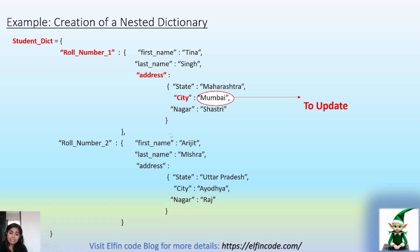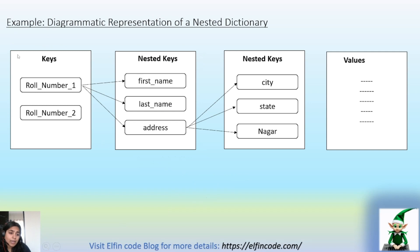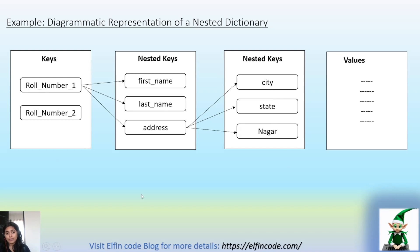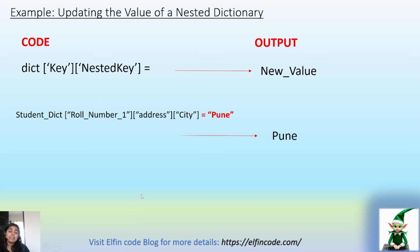This is what is called a nested dictionary — a dictionary inside a dictionary. In the diagrammatic representation, we first have the main keys: role number one and role number two. Inside these keys we have nested keys such as first name, last name, and address. Address has another nested level with keys such as state, city, nagar, etc., and each of these keys has its own values.